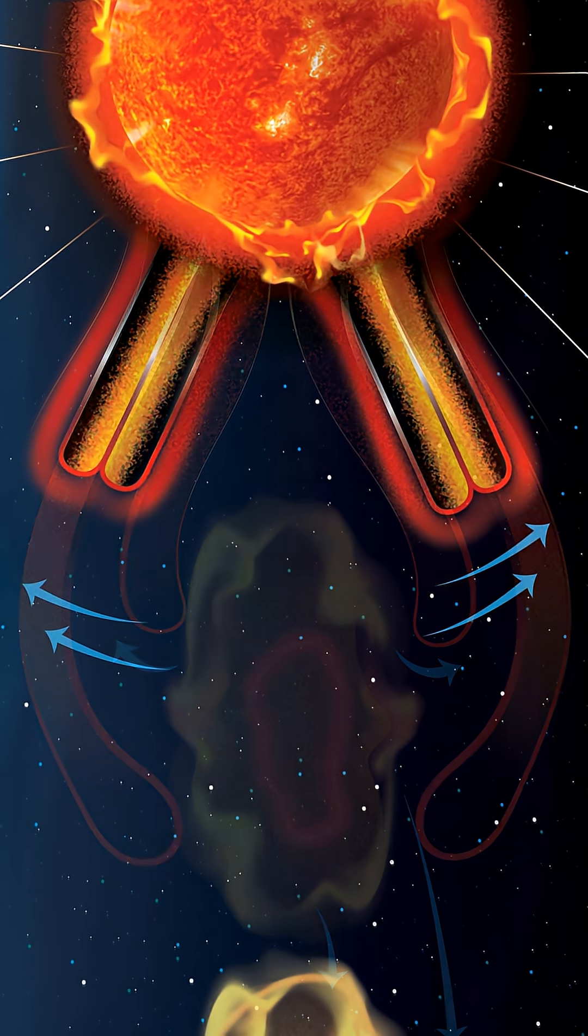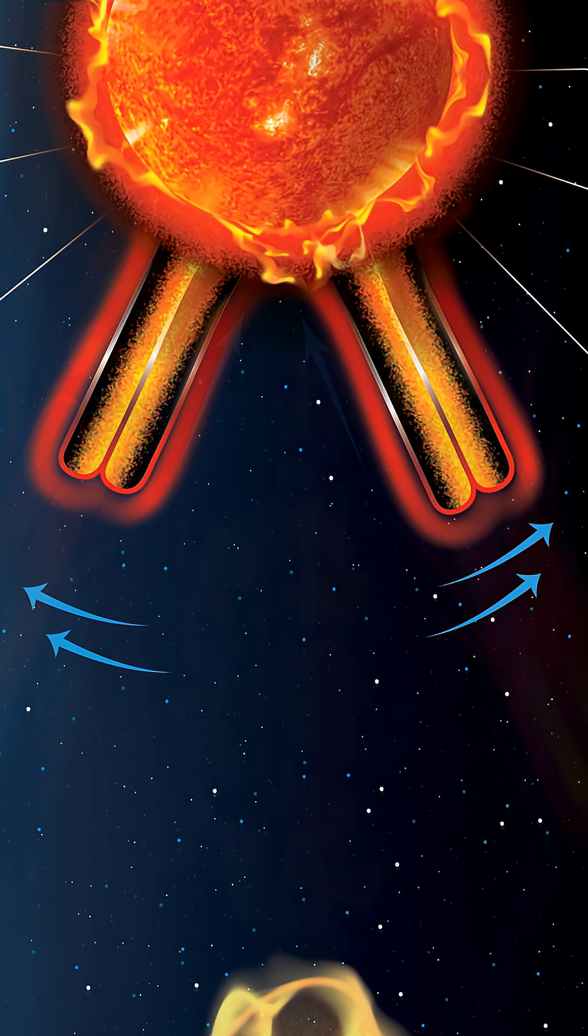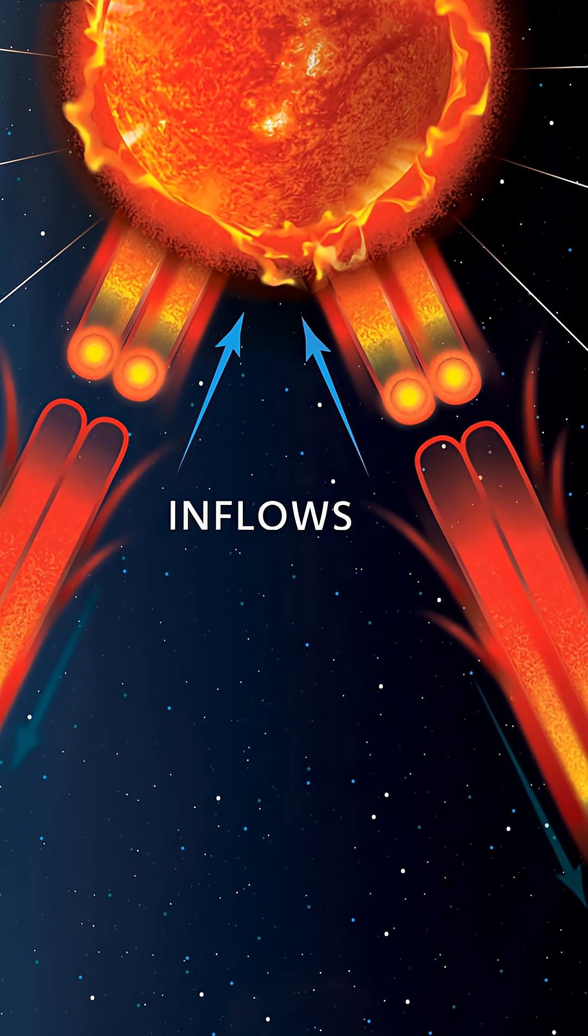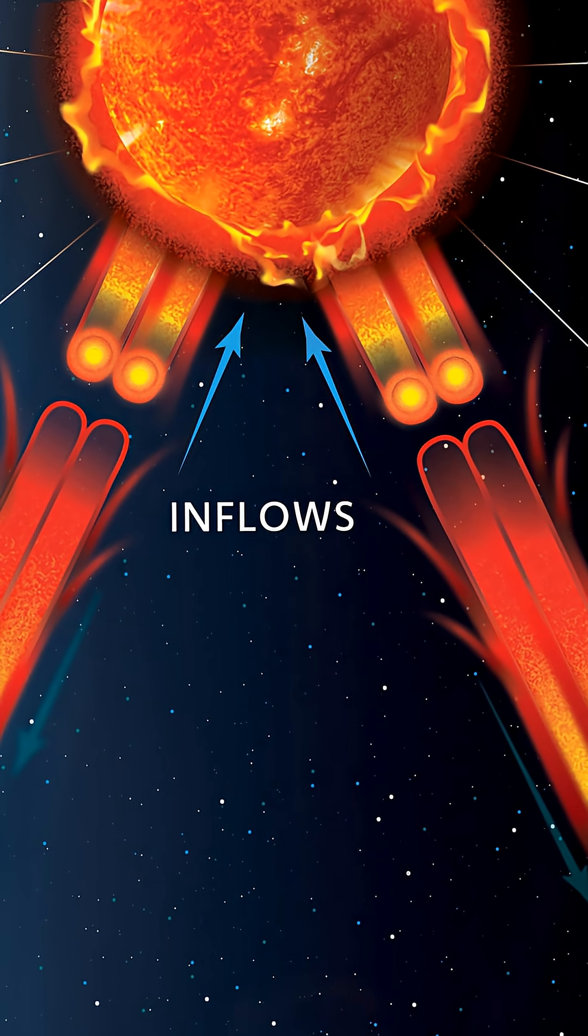These loops then retract towards the sun before breaking and dragging solar material with it and recycling its own magnetic energy.